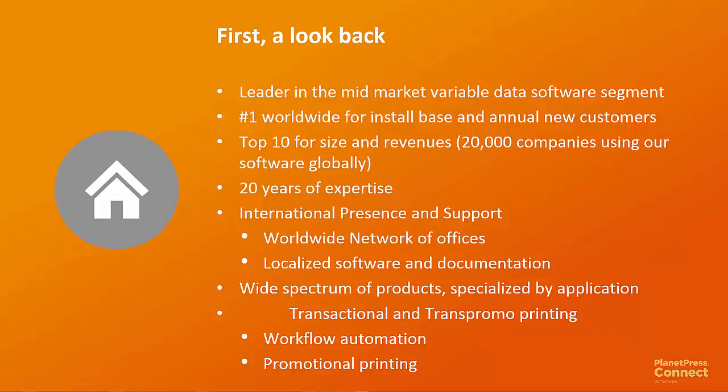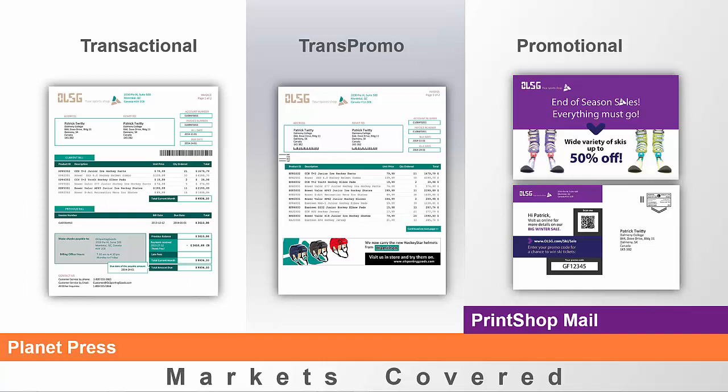Before going further, a quick look back. Over the years Objective Loon has grown to become a worldwide leader in the variable data software market space. We have a large and growing customer base of over 20,000 right now. We have offices in 23 or 24 different countries throughout the world and have become a truly global organization. We continue our focus on transactional and trans-promotional printing as well as workflow automation, but we're also expanding on what we can do and what we can offer. Over the years PlanetPress has always maintained a broad presence in the marketplace, with a heavy focus on the transactional and trans-promotional space to include documents like invoices and statements, pick slips and pack slips.